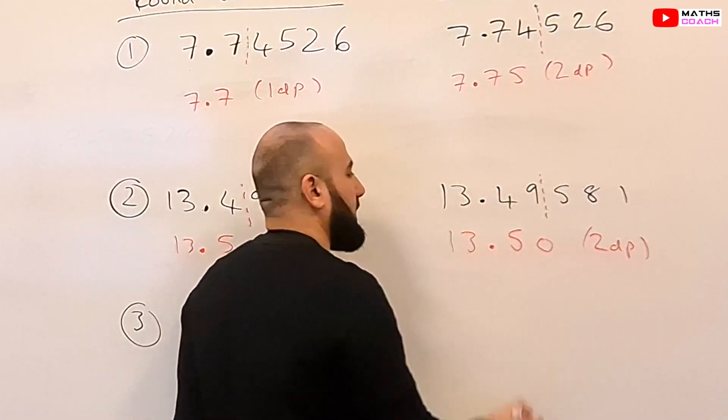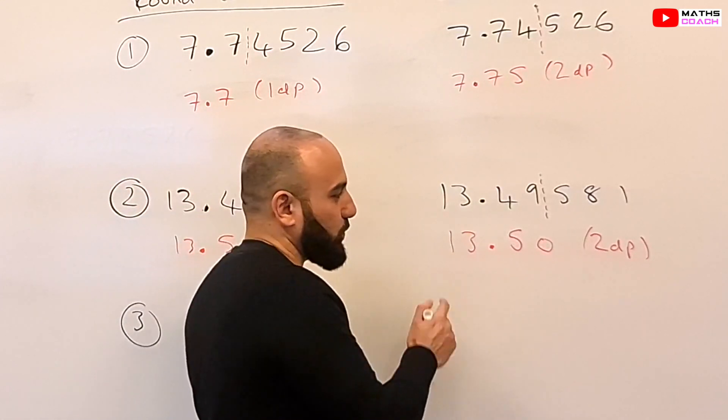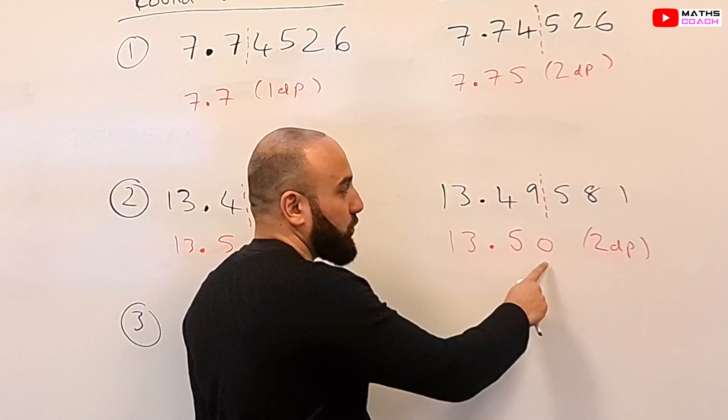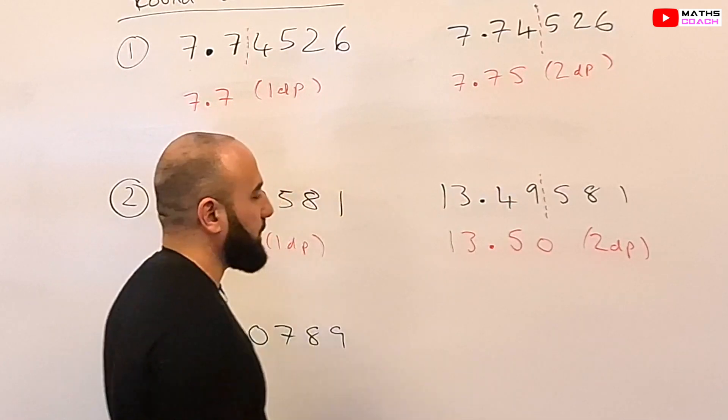This number has been written to two decimal places. As you can see, after the decimal point we have two numbers, like in the previous examples.